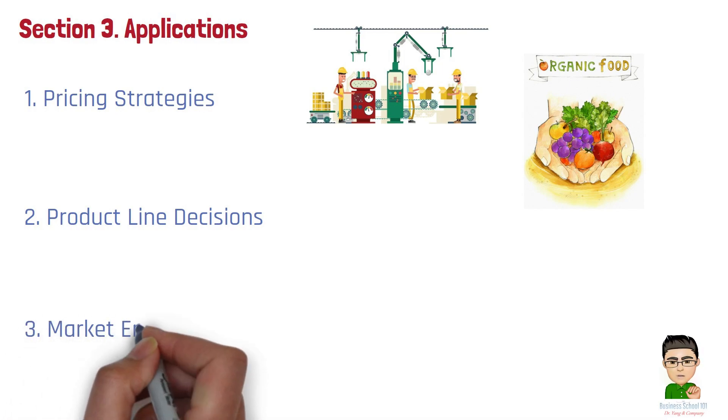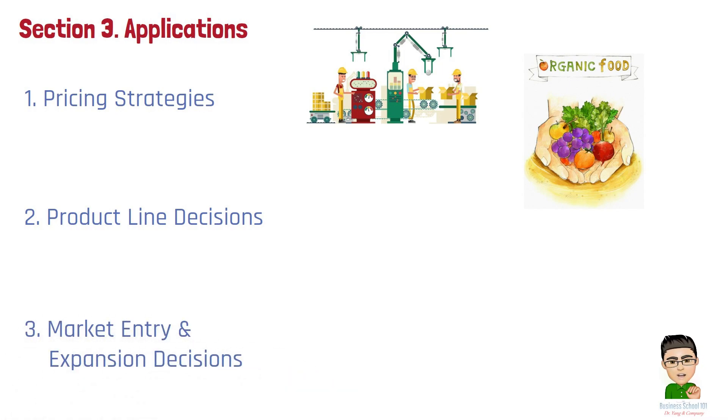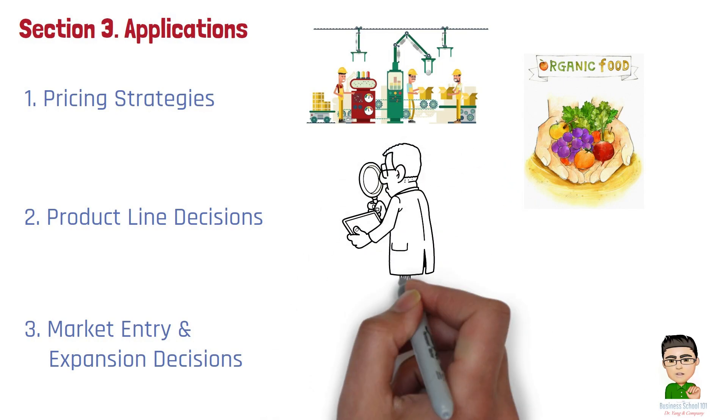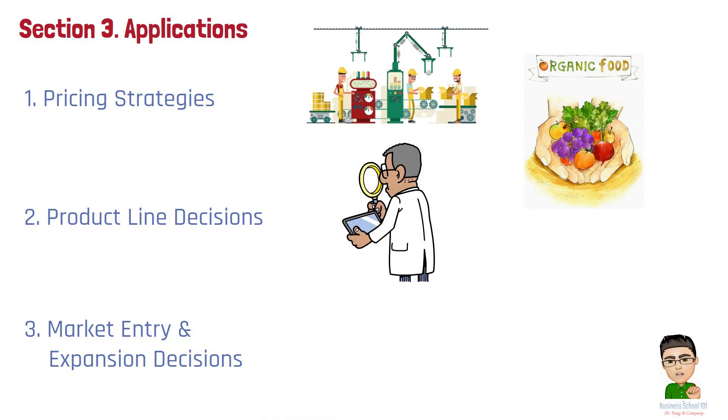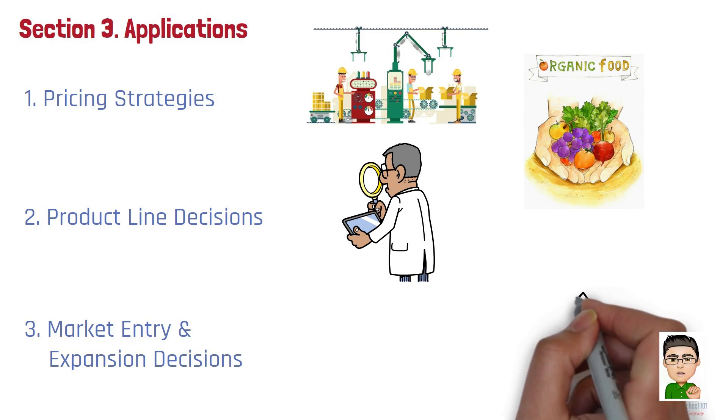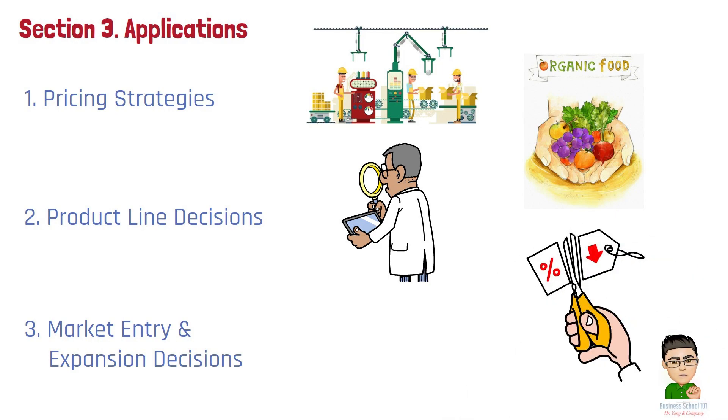Number 3: Market Entry and Expansion Decisions. Elasticity helps businesses identify opportunities for market entry or expansion by revealing consumer responsiveness to prices. In markets with elastic demand, companies might enter with competitive pricing or innovative products to meet consumer needs effectively. For example, a tech company entering a new international market might use elasticity analysis to set optimal prices, starting lower in elastic markets to build market share before increasing prices as brand loyalty grows.